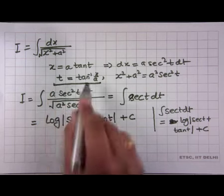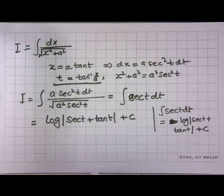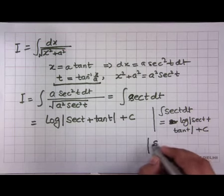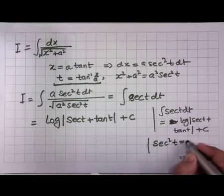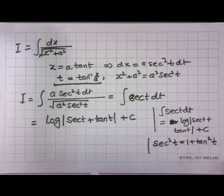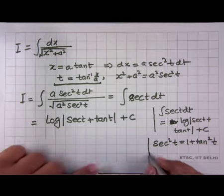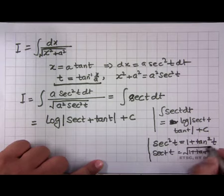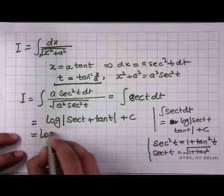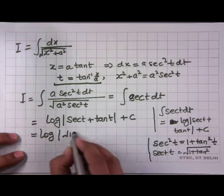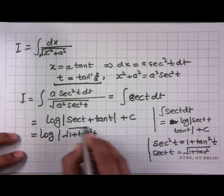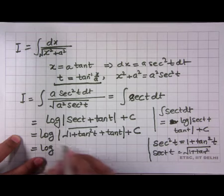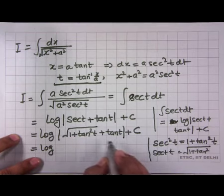Instead of substituting t directly, we should use another trigonometric relationship. We know sec²(t) = 1+tan²(t), therefore sec(t) = √(1+tan²(t)). So instead of sec(t), I replace it: log(√(1+tan²(t)) + tan(t)) + C. Now we can see that tan(t) relates directly to x.